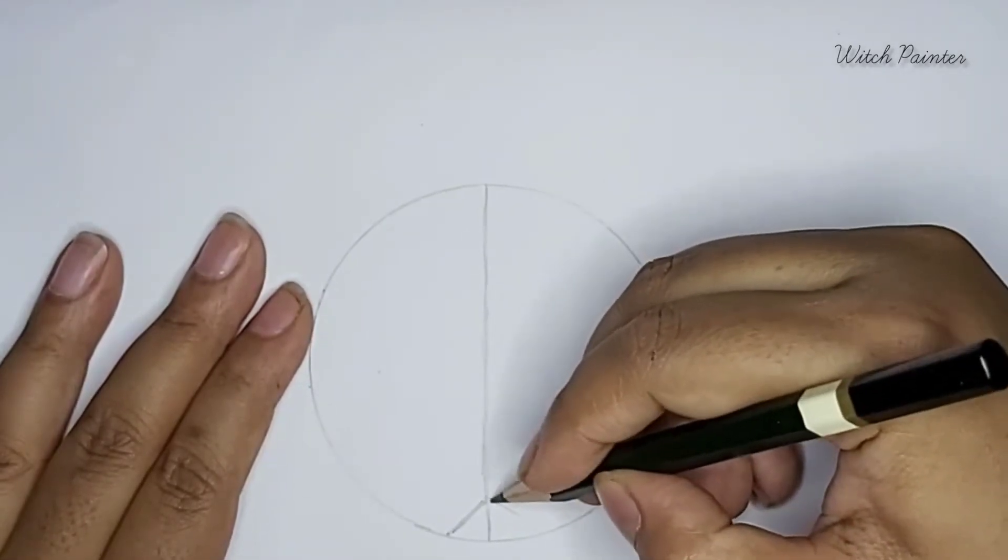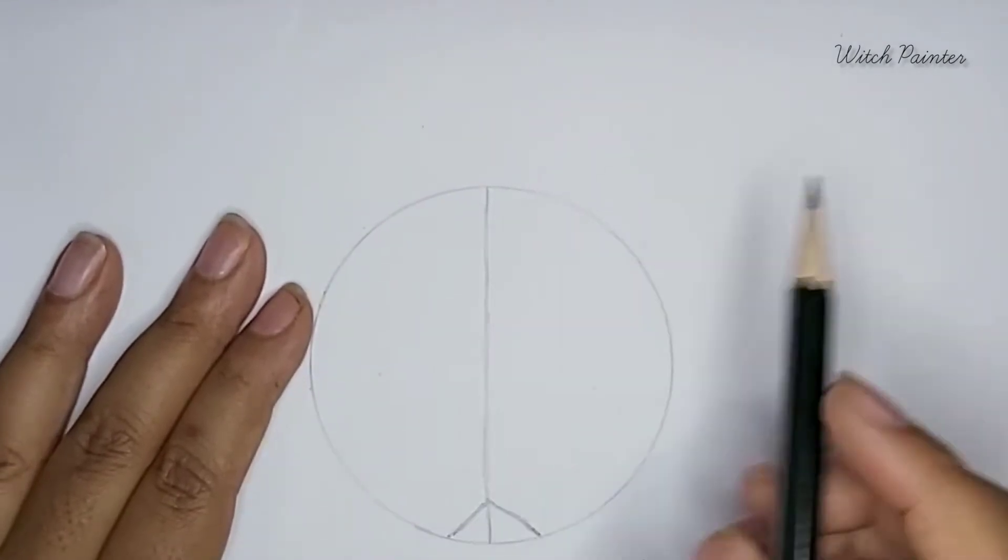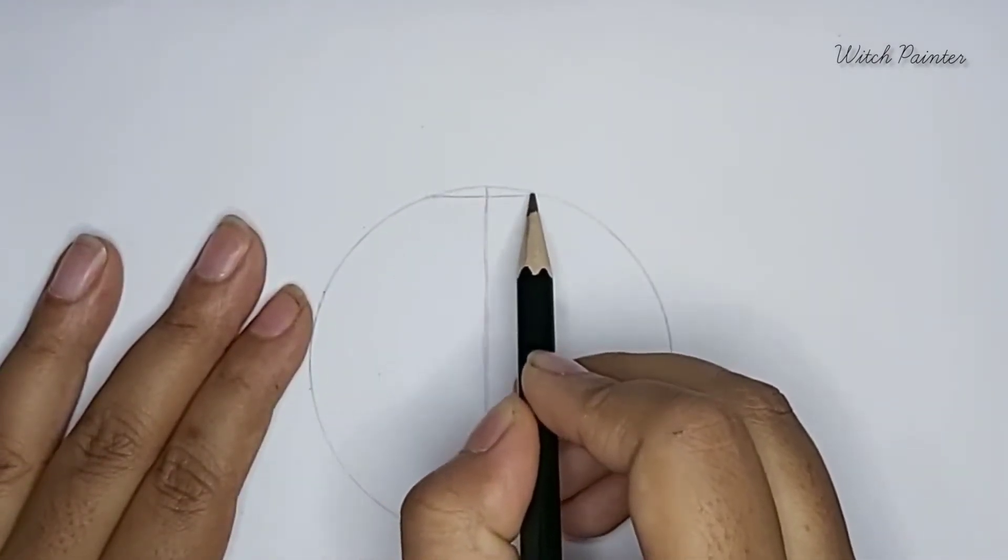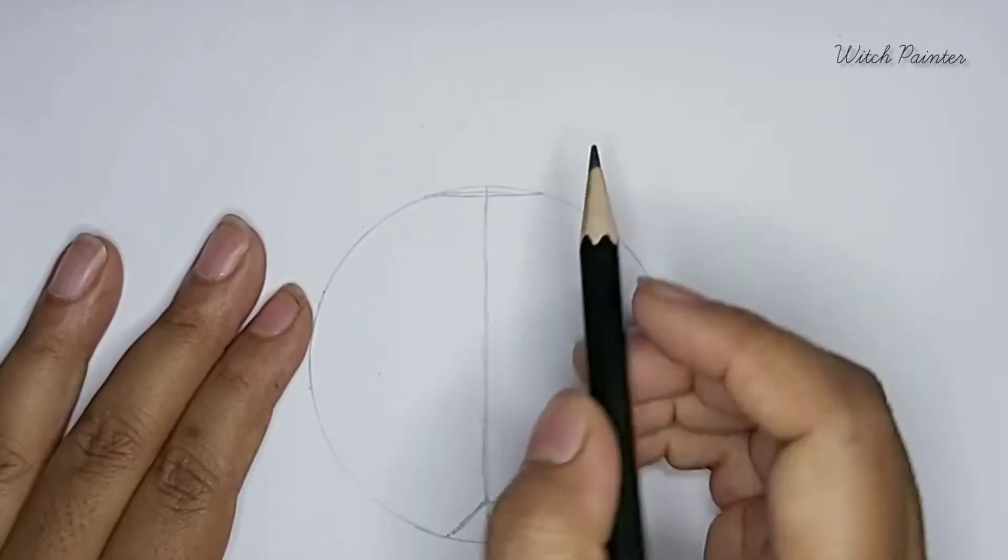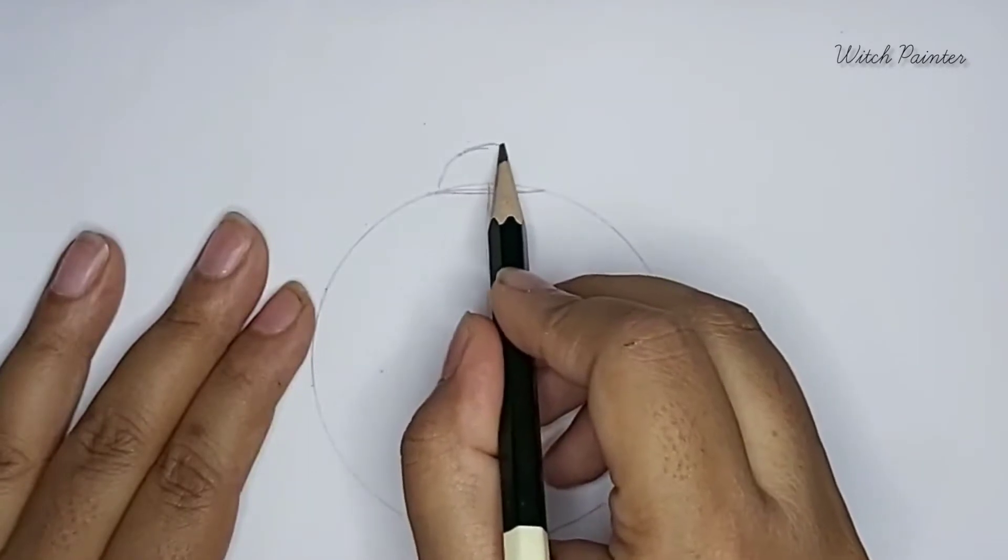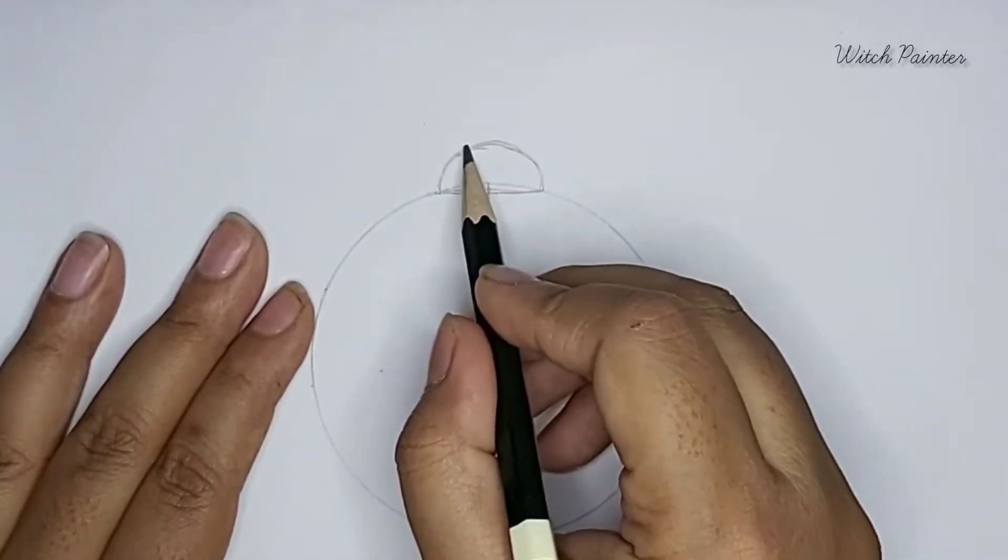Then you will add its head. You will draw one straight line here like this, and then draw one small semicircle like this.